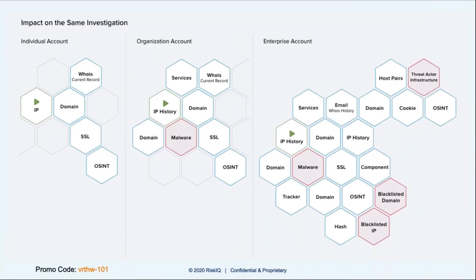This next slide gives a breakdown of the level of data you have with the different types of accounts. Where it says individual account, that's the community license; organization account is the security professional license. From a visual perspective, you can see that under the organization account there's malware — maybe that malware hash came back beyond 14 days, so you wouldn't have access to that information on the individual account.